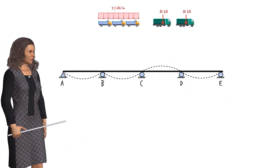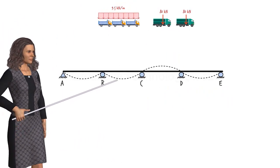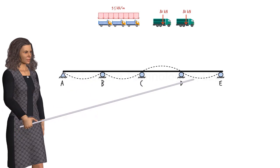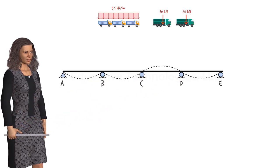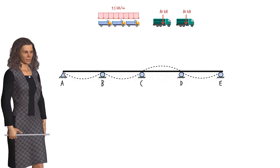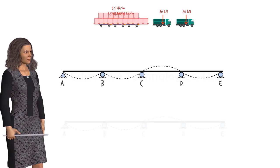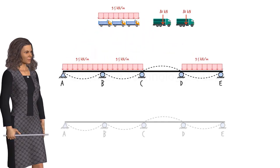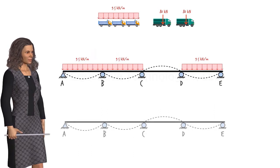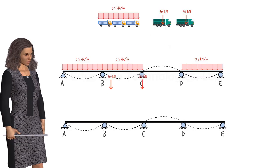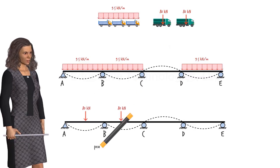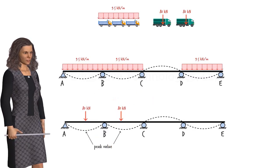Since the influence line has negative values in segments AB, BC, and DE, in order to produce the maximum negative moment at B, we need to place the uniformly distributed load on these segments like this. Also, according to AASHTO specifications, a concentrated truck load needs to be placed at either side of support B, at the point where the influence diagram has its peak value.